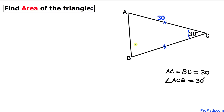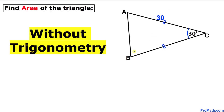Welcome to pre-math. In this video tutorial we have got an isosceles triangle ABC such that side length AC equals side length BC, both are 30 units, and angle ACB is 30 degrees. Now we are going to calculate the area of this triangle ABC, and I'll show you how to find the area without trigonometry.